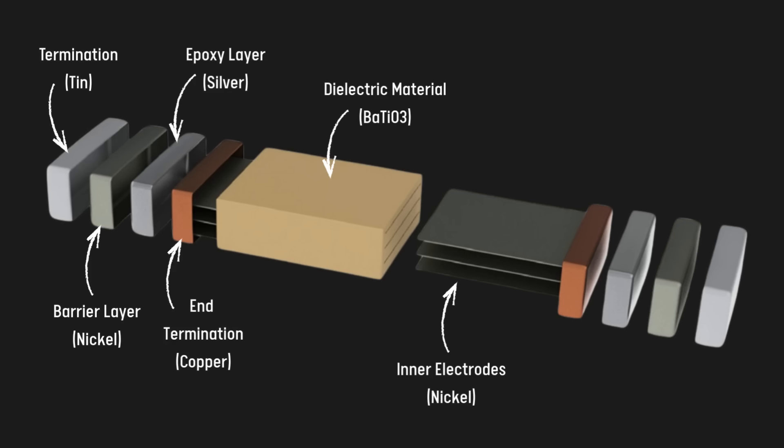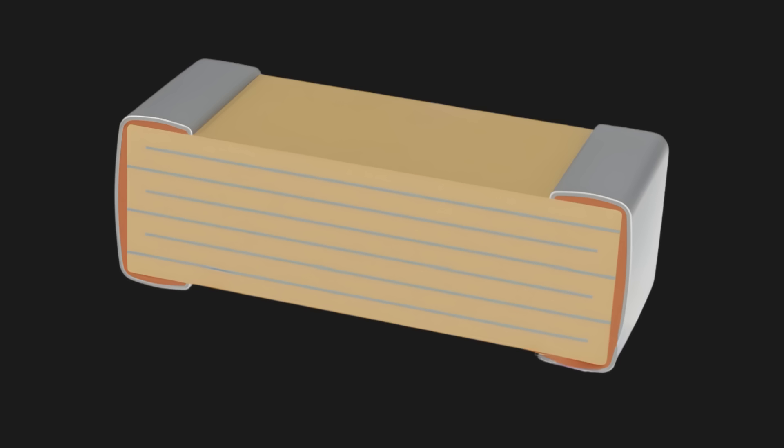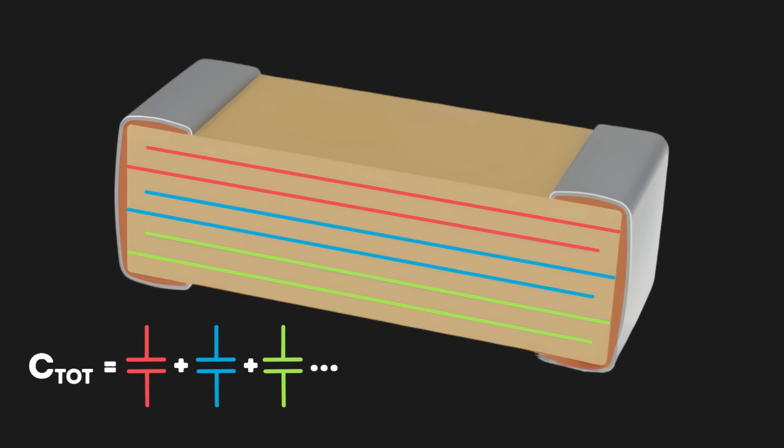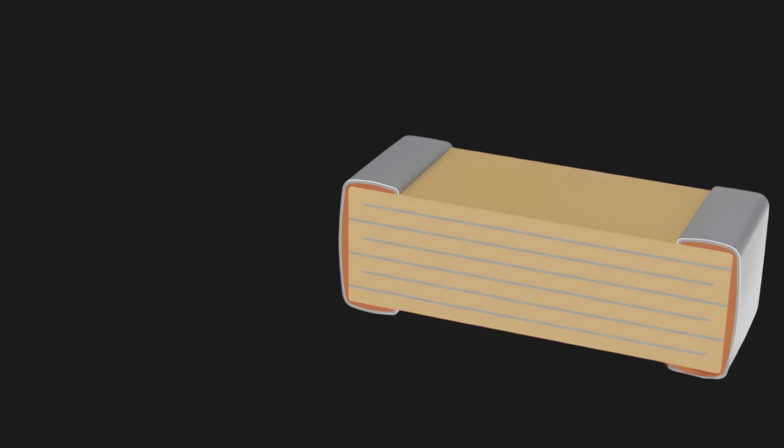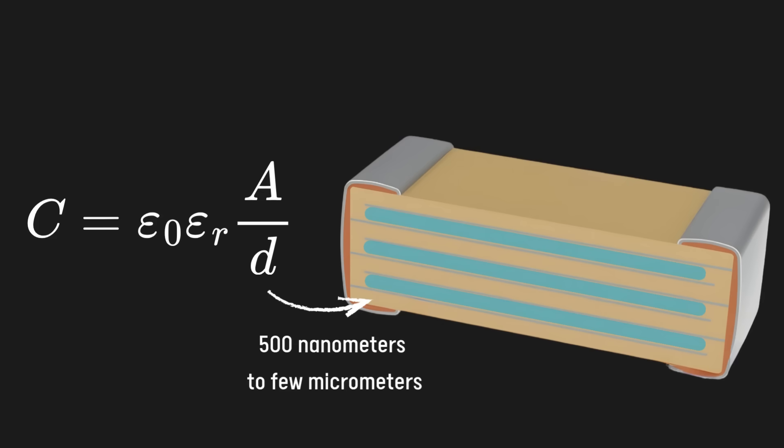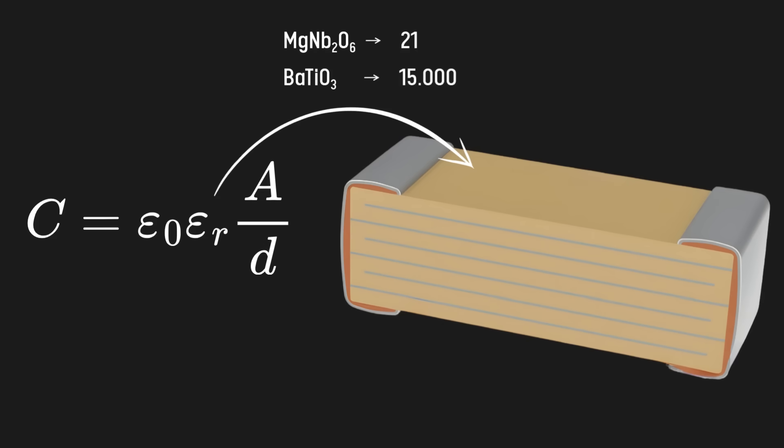To understand the non-linearities of MLCCs, you have to understand how they are built. These devices are optimized to be small and are structured internally as many capacitors in parallel, increasing the total capacitance. But because they are small, area is not their strength. Instead, most of the capacitance comes from the short distances between plates and the permittivity coefficient of the ceramic materials. But these materials have drawbacks.